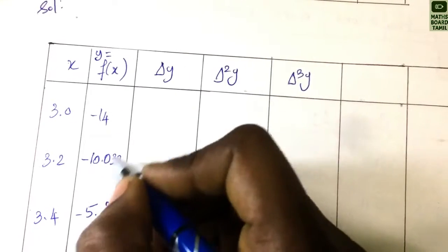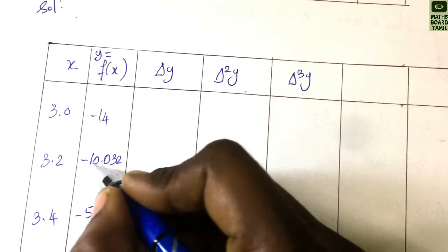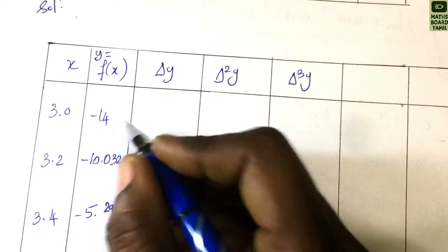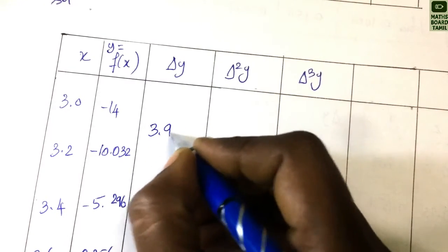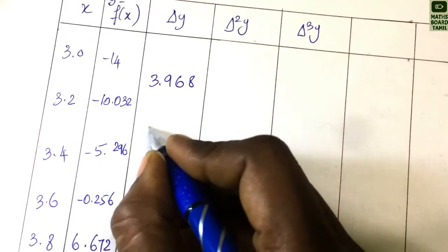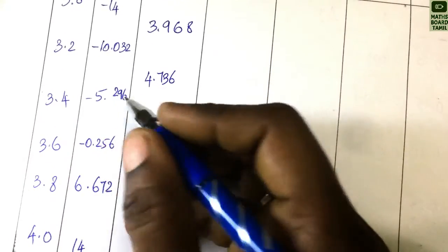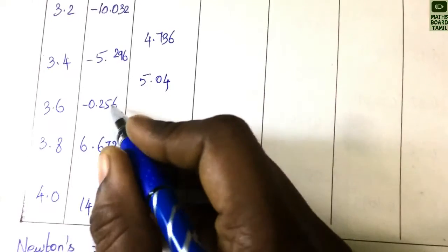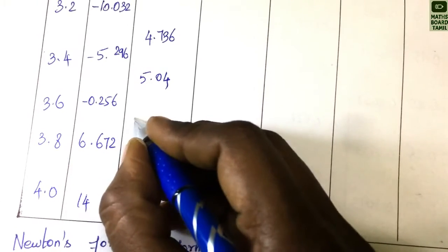Now we compute the first difference column Δy. For example, −10.032 + 14 = 3.968. Continuing: 4.736, 5.04, and 6.928 for the remaining first differences.